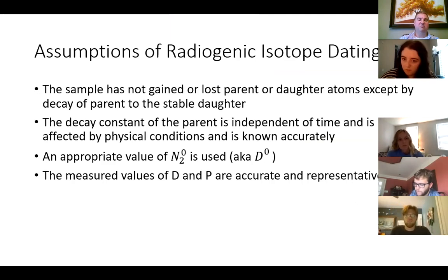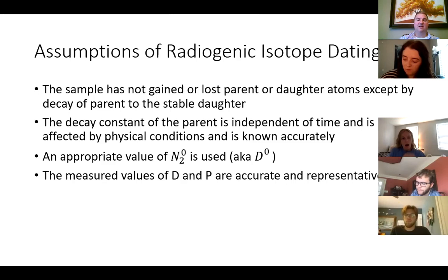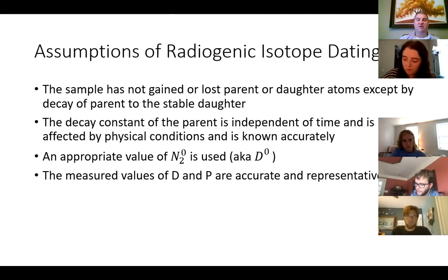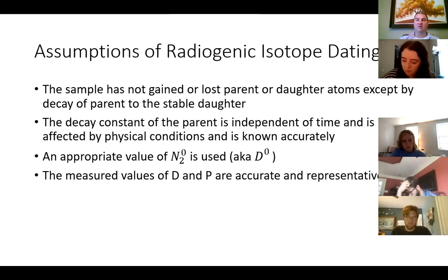The decay constant is not affected by physical conditions and is known accurately. You use an appropriate value of the original amount of daughter, which typically you get from the graph. Sometimes if the graph is not a super straight line, you have to make some assumptions about what the original amount of stable daughter would have been. And when you measure the values of daughter and parent, they are accurate and representative — not just of the mineral but of the layer of rock, the strata that you're looking at.